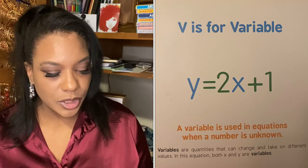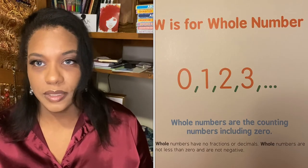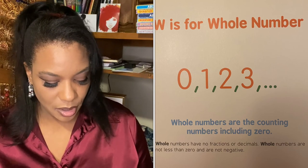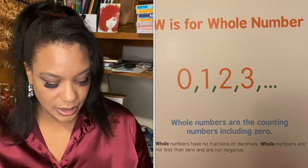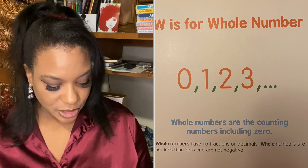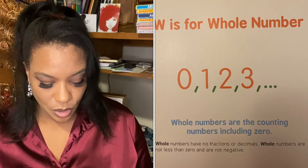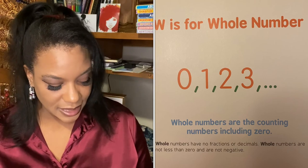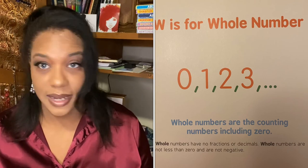W is for whole number. Whole numbers are the counting numbers including zero. Whole numbers have no fractions or decimals. Whole numbers are not less than zero and are not negative.